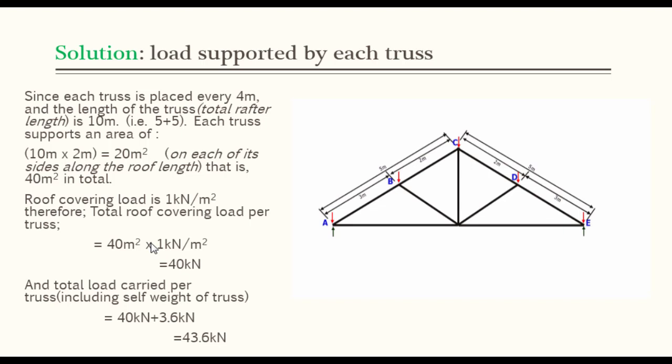Roof covering load is 1 kN per meter squared. Therefore, total roof covering load per truss is equal to 40 m² times 1 kN per meter squared, which gives us 40 kN. Remember in the question, the total roof covering load is assumed to be 1 kN per meter squared. Therefore, the total load carried per truss, including self-weight of the truss, is 40 kN plus 3.6 kN, which gives us 43.6 kN.